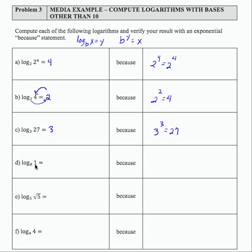Log base 8 of 1, what's the exponent on 8 that gives me 1? So I want 8 to some power equaling 1. What's got to go here? To get 1 from an exponent, the exponent has to be 0.